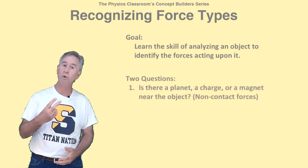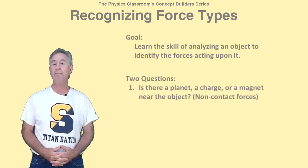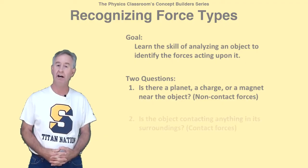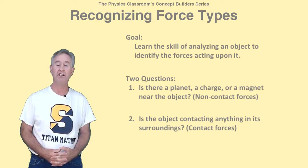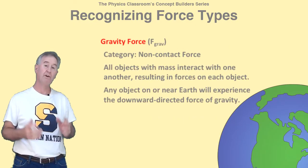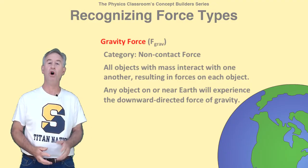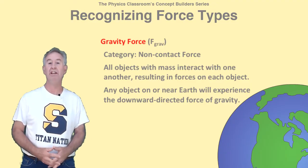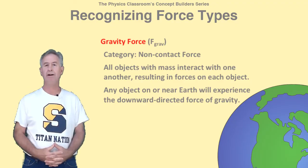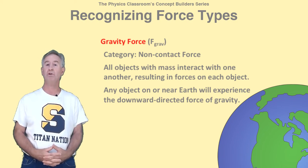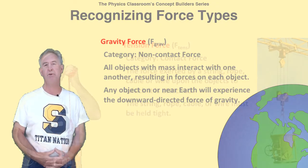This skill begins by asking two questions of the object. First, is there a planet, a charge, or a magnet nearby? This helps you to identify non-contact forces. Two, is the object physically touching anything in its surroundings? The answer to the first question is likely yes — most analyses will involve objects on or near the earth. The earth and objects near it interact with each other, resulting in a downward force upon the object. We refer to this as the force of gravity. You can count on this force as being always present — it's our first type of force.